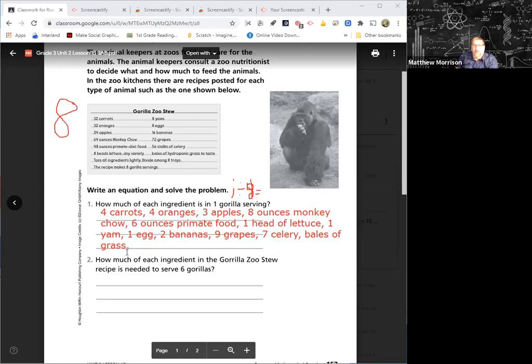This is eight, this is one. So what do we have to do now? It says how much of each ingredient of the gorilla stew is needed to make six gorillas. So if this is for one, how would I figure out how many for six? Yes, you're right. You would multiply each of these by six.